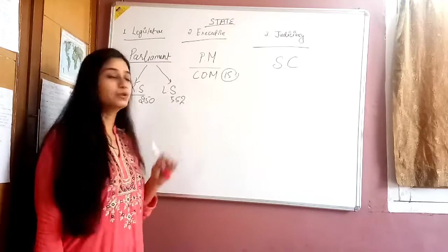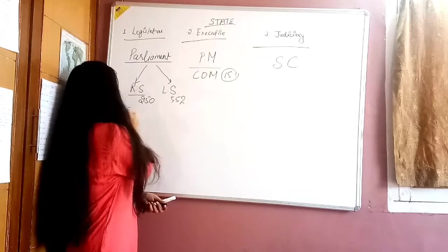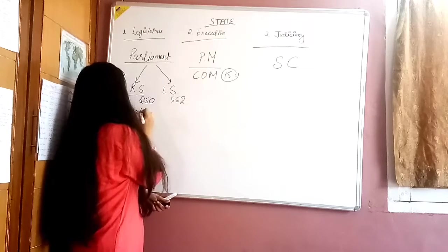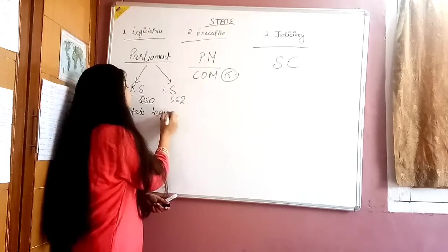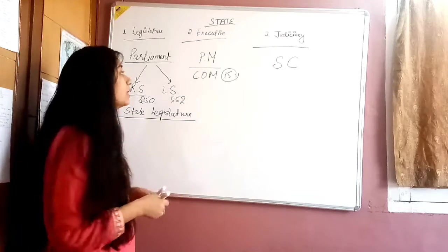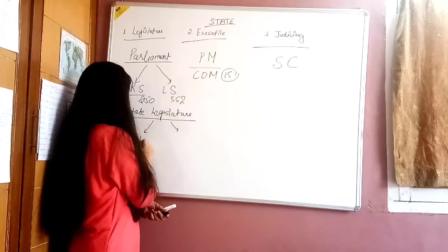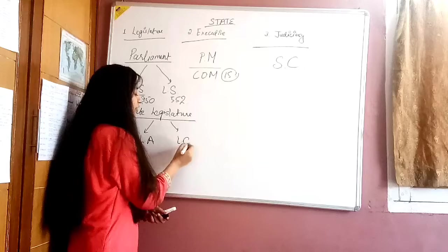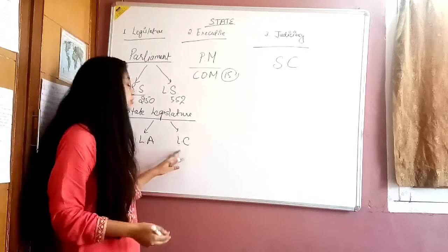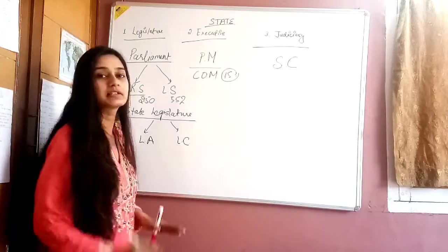Now we will talk about the state level. The state level has the state legislative assembly. The state legislature is divided. There are two forms: Legislative Assembly and Legislative Council. Legislative Assembly is present in all states. Legislative Council does not have all the states or the UTs.